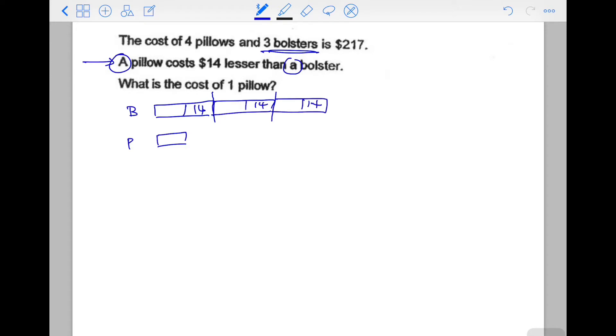How many pillows did they buy? Total four, so this is one, two, three, and four. The total amount spent for these four pillows and three bolsters is $217.